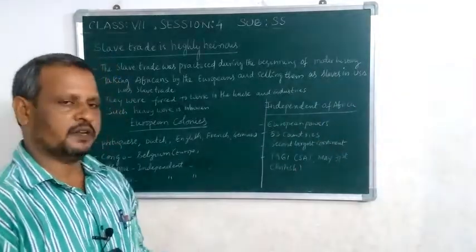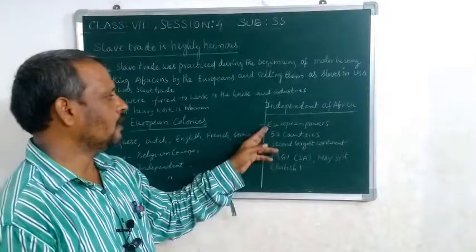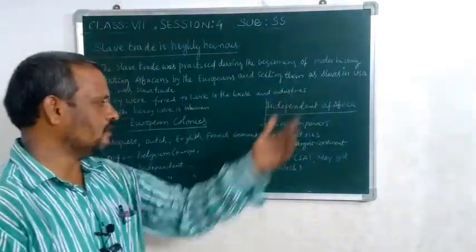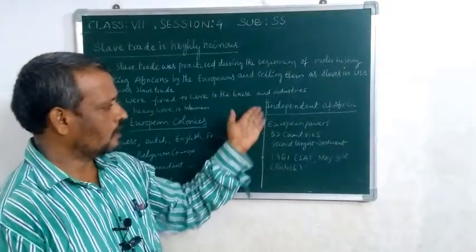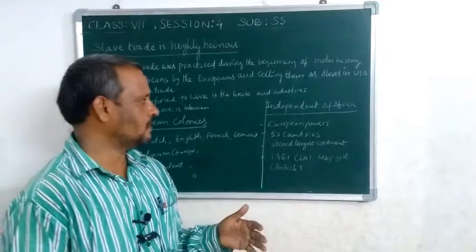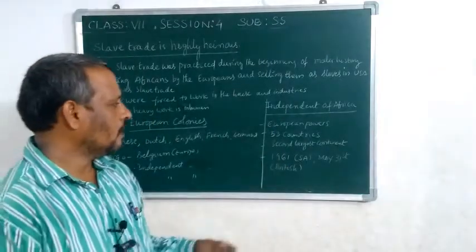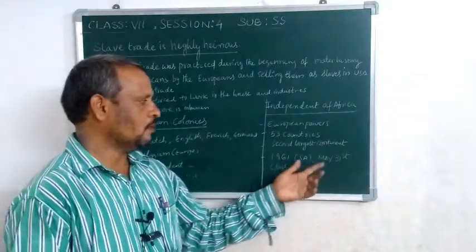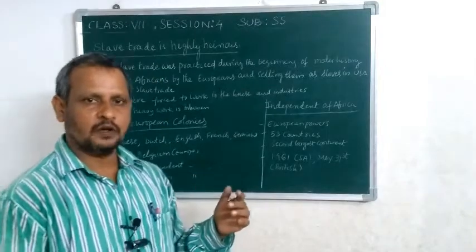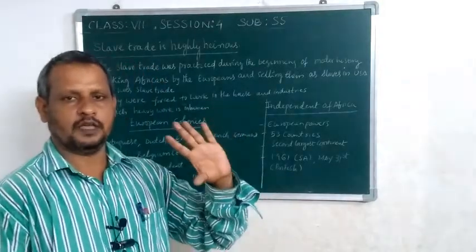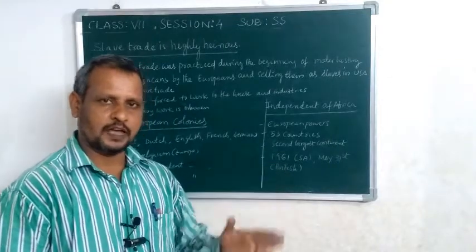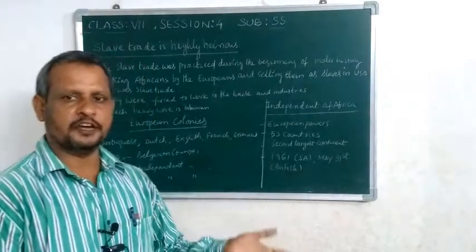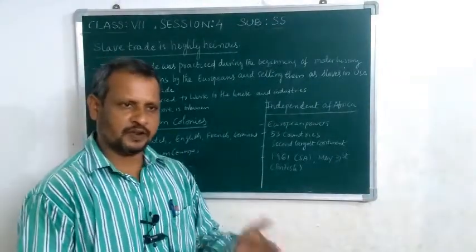After a long struggle, Africa got independence from European powers. Africa contains 53 countries and is the second largest continent in the world. North Africa and South Africa separated, and South Africa got independence in 1961 from the British. In this chapter, we learned about the Africa continent, its climate, the people of Africa, European colonies, and the independence of Africa.